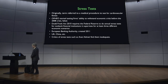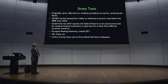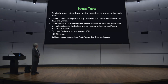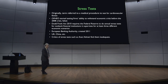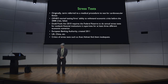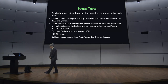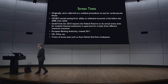Now the term has moved into finance. The Office of Federal Housing Enterprise Oversight was actually doing stress tests on Fannie Mae and Freddie Mac before the 2008 crisis. It didn't work — those two firms both failed — but they were trying anyway.